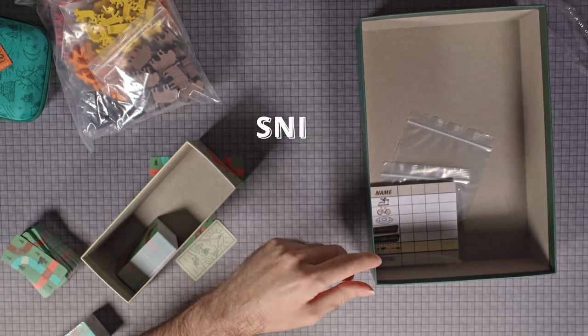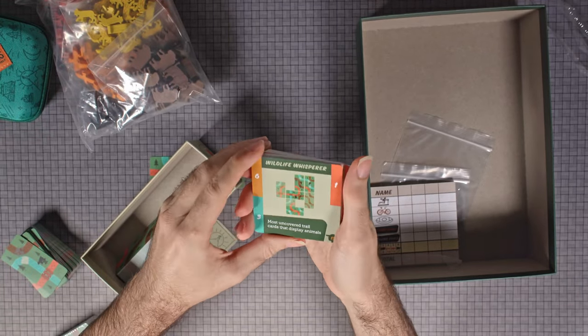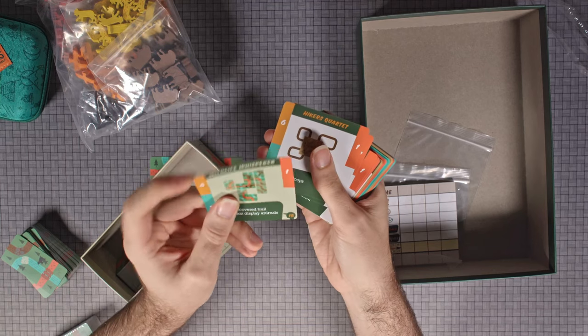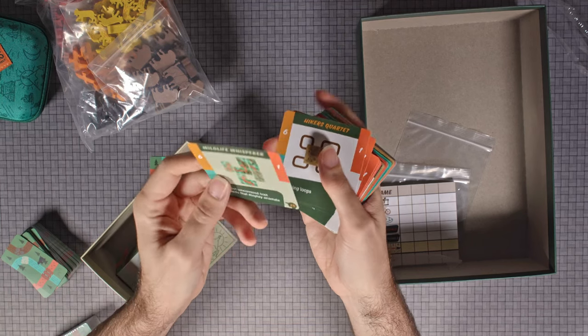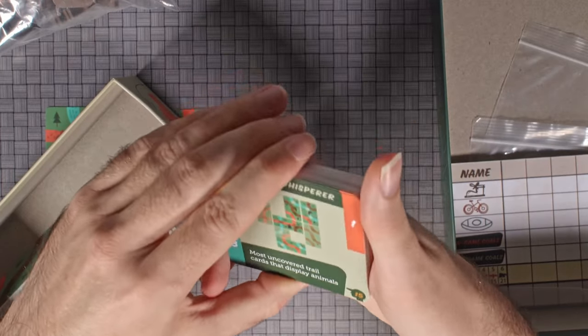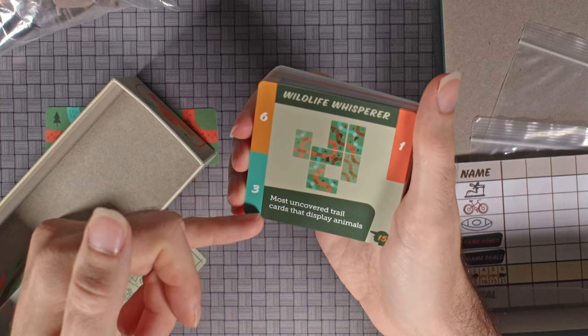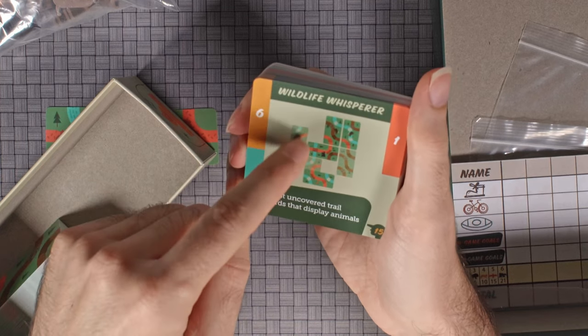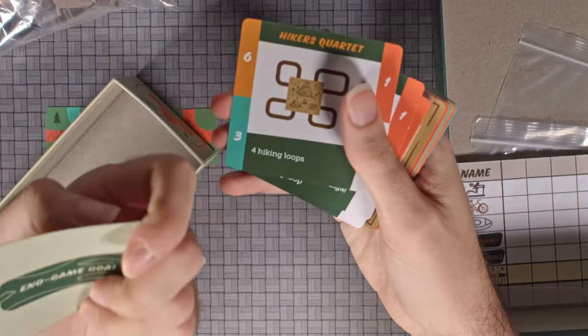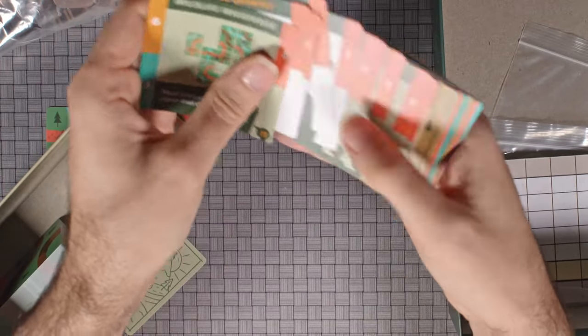Wait, are these—yeah, these are PVC plastic too. Oh my gosh, I'm getting Chip Theory Games vibes right here. Yeah, that's plastic. I think this is waterproof right here, folks. Okay, so these look like extra bonus cards and game scoring cards: most uncovered trail cards that display animals, little things to—yeah, okay, look at that. In-game goals, that's what I thought.